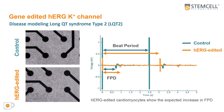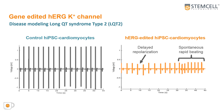We can observe that the HERG-edited HPSC-derived cardiomyocytes have a prolonged field potential duration and beat period compared to the control. The HERG-edited cardiomyocytes show an expected increase in FPD as a result of the heterozygous mutation in the HERG channel. Here we show field potential recordings for the control and the HERG-edited HPSC-derived cardiomyocytes for a 45-second period.